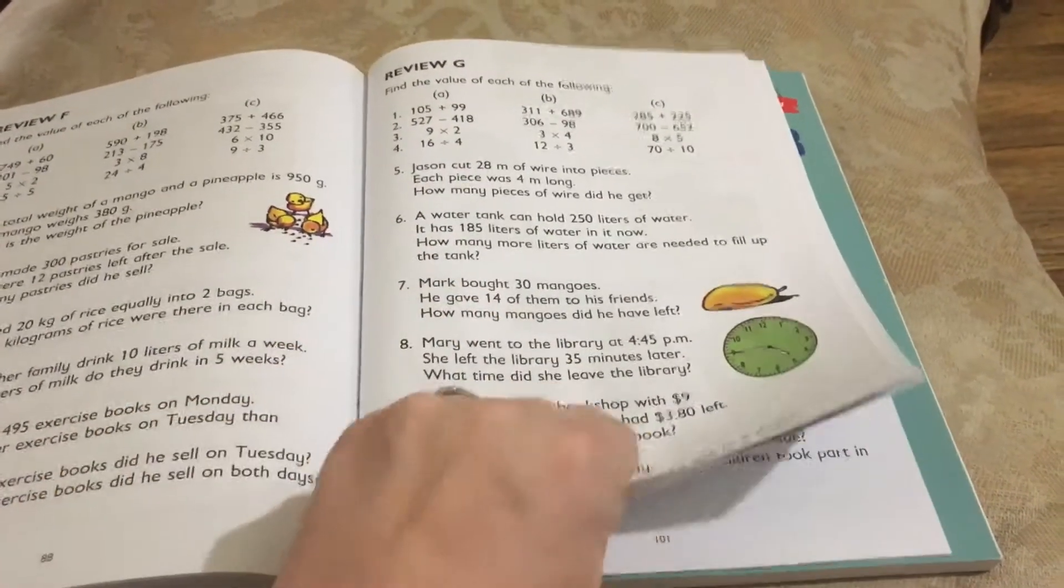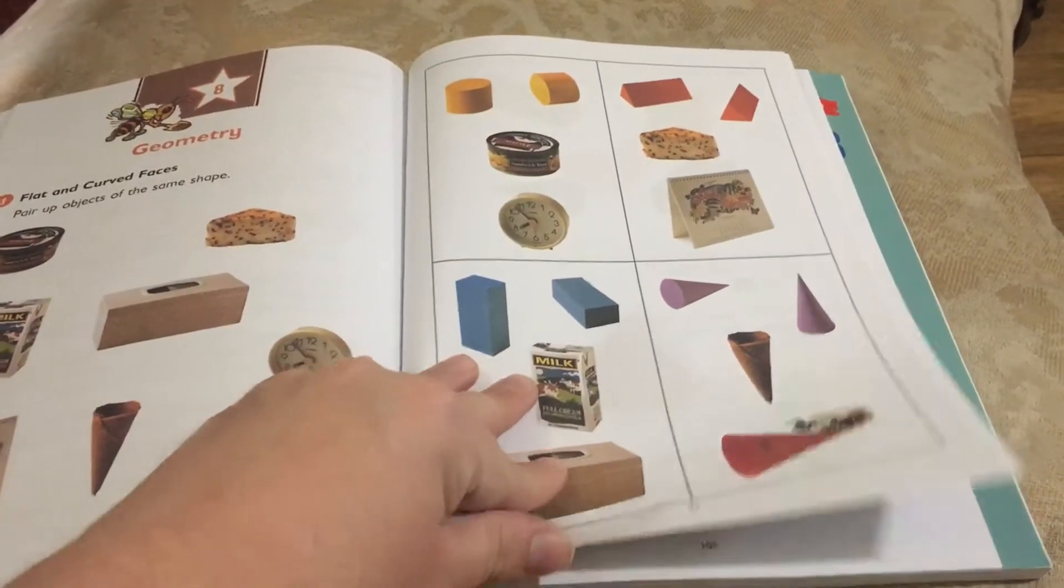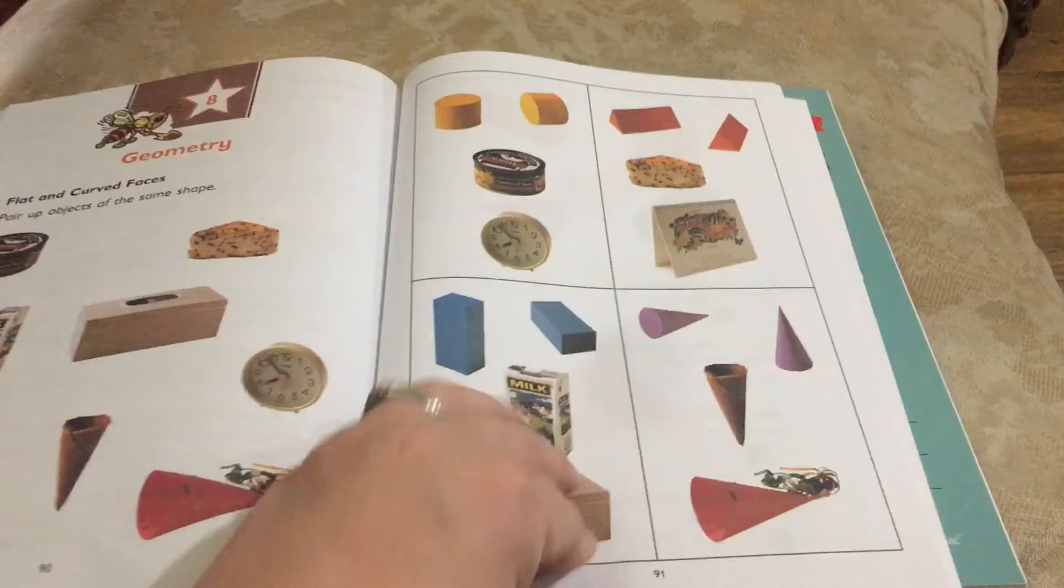Your child may be in first grade and going into second grade. This may be perfect. Then again, it may not. You may want to start with 1B, and that is totally fine.